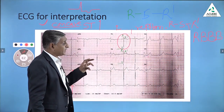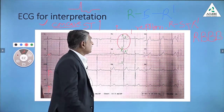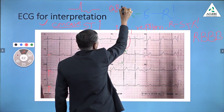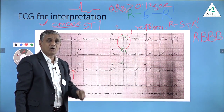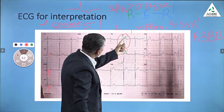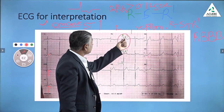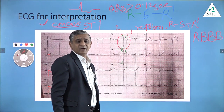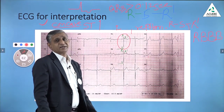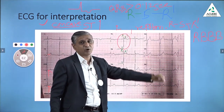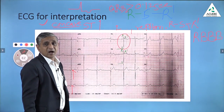Now a very important point: this is not complete RBBB because to define complete RBBB, the QRS duration should be greater than 0.12 seconds — that is, three small squares for the QRS complex. You can see that the QRS complex here is only one or one and a half small squares wide. And that's why this is incomplete RBBB. The R-S-R1 pattern is present, but the QRS complex is not wide enough to exceed 0.12 seconds, so we call it incomplete RBBB.